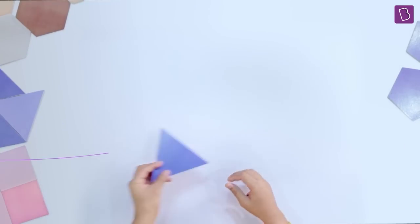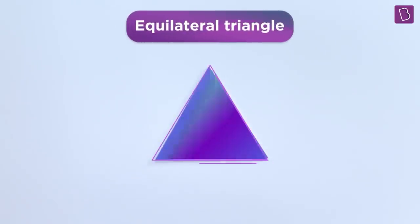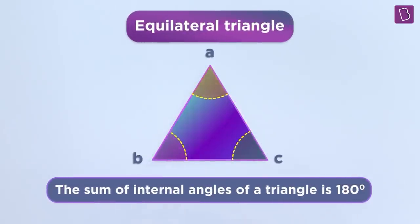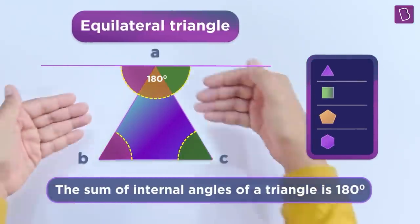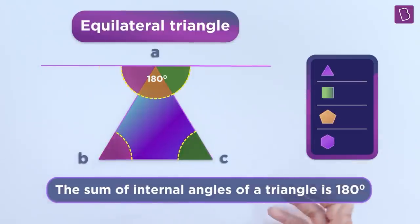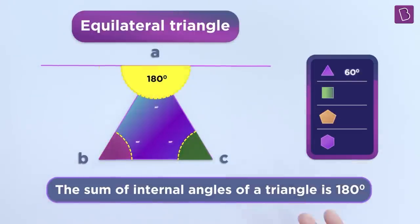Let's begin with the triangle. We know this, right? That the sum of the internal angles of a triangle is 180 degrees. Since it's a regular polygon with three angles, it means that each of these angles is one-third of 180 degrees, which is 60 degrees.